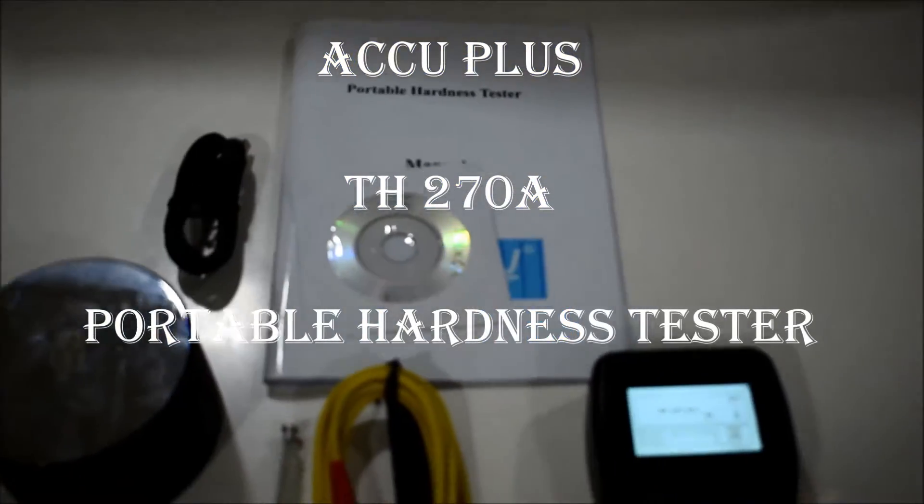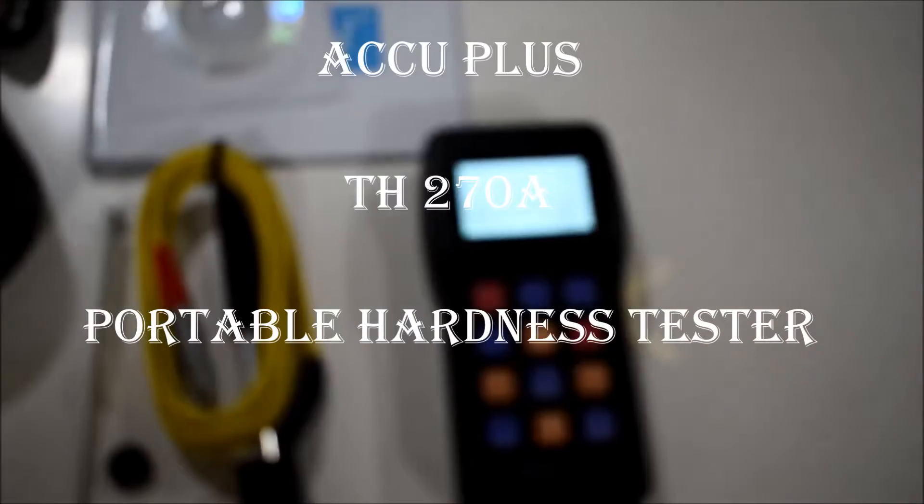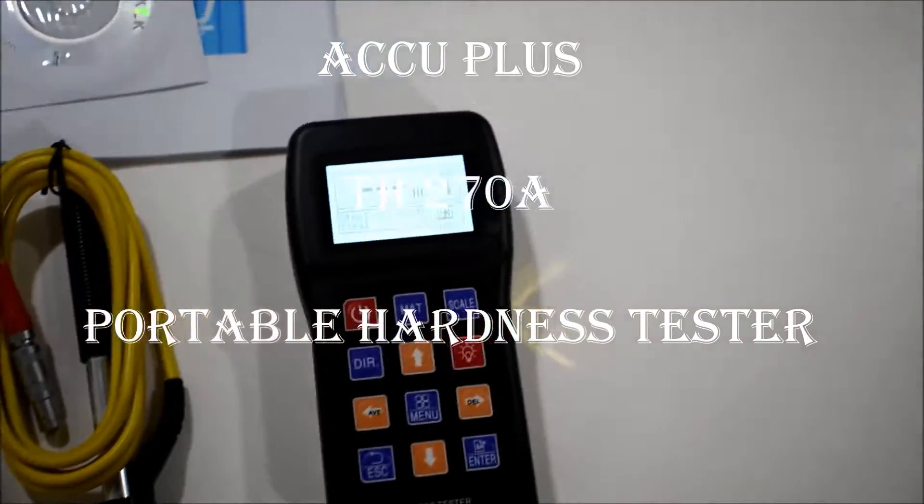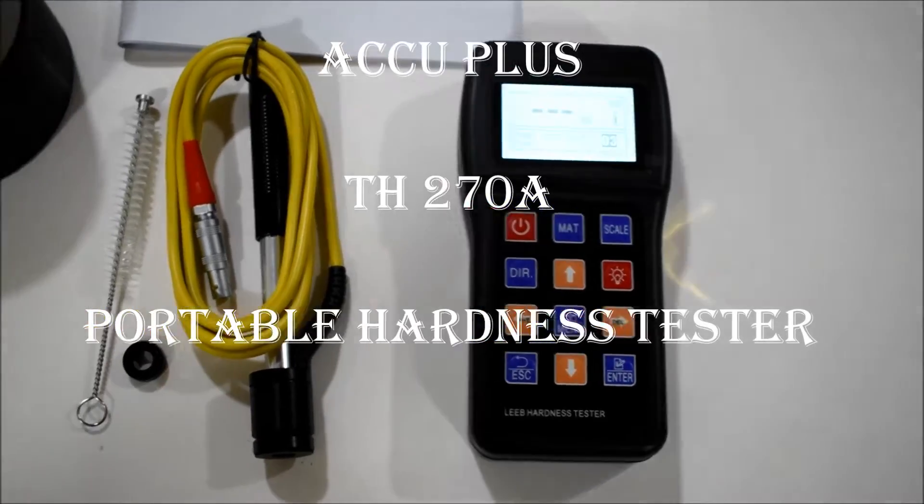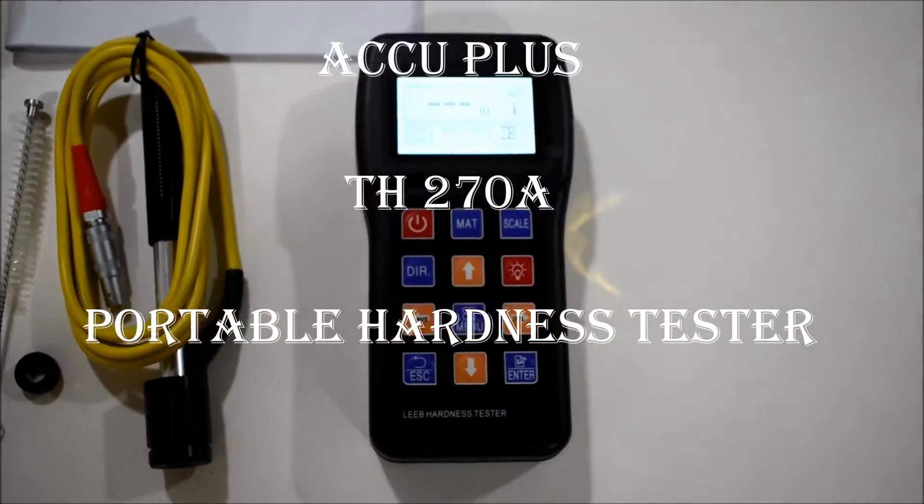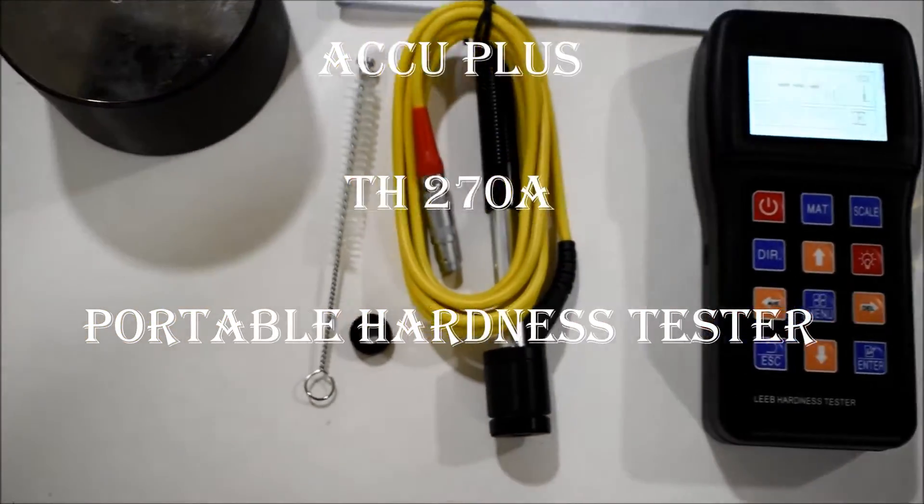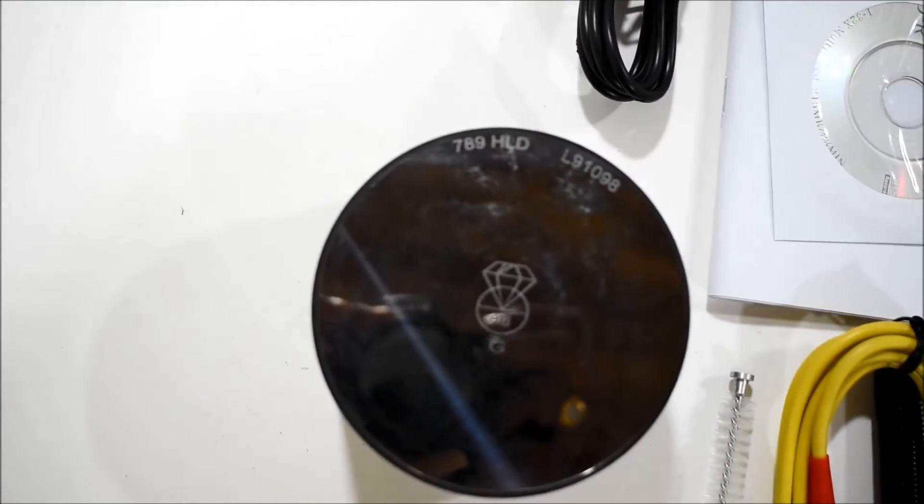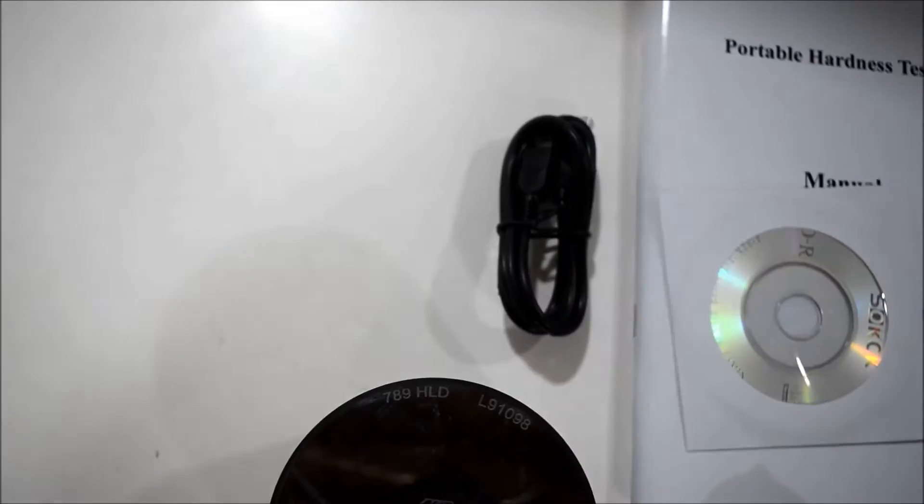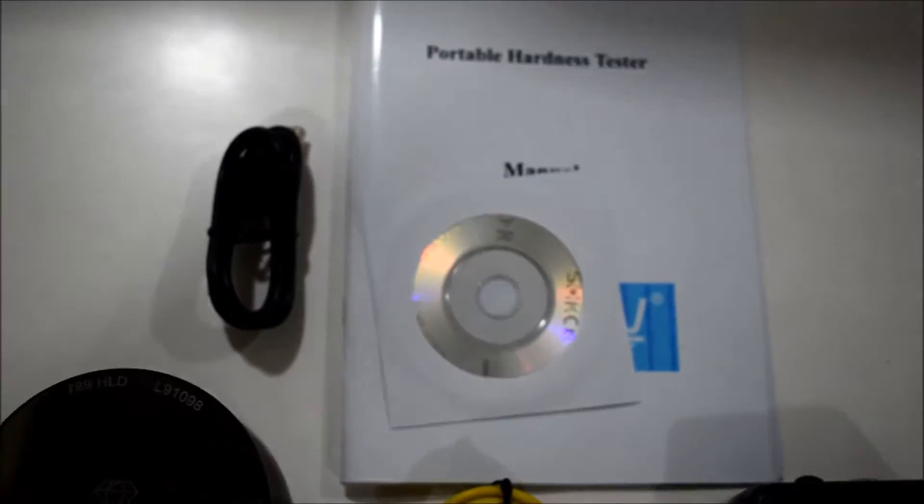This is the EQ plus hardness tester, model EQ 270A. This is the instrument probe and hardness block. We also have the data cable, CD, and manual.